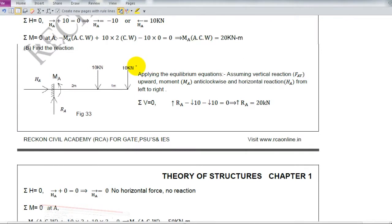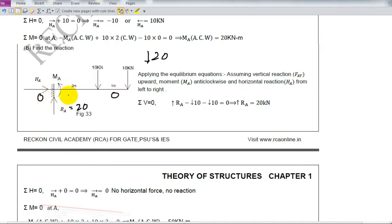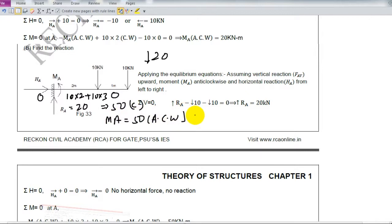Let us take the next question — also a simple one. The total vertical force coming is 20, so the reaction will be 20 upward. The horizontal force is 0, so that reaction will be 0. The moment coming is 10 into 2 plus 10 into 3, which is 50 clockwise. So the moment reaction will be 50 anticlockwise.